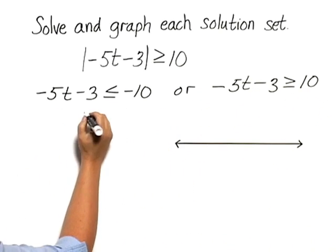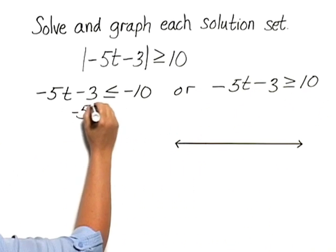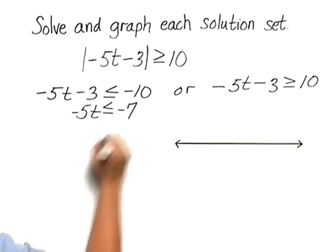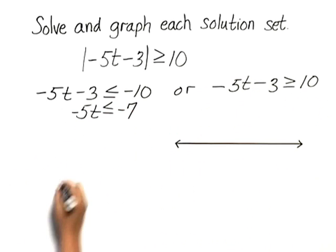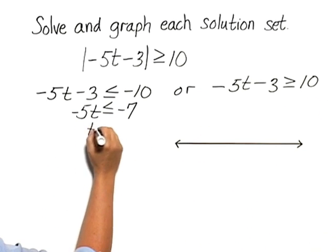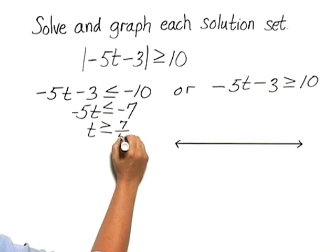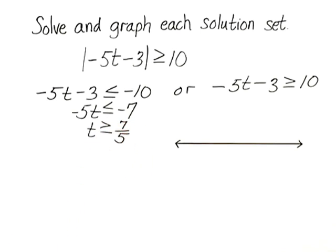Solving, we add 3 to both sides and we get negative 5t is less than or equal to negative 7. Dividing both sides by negative 5, we have t is greater than or equal to 7 fifths. And I had to change the direction of the inequality symbol.